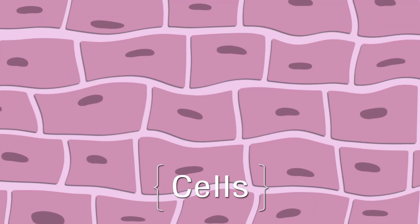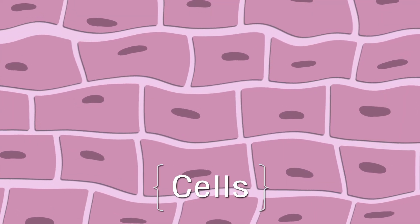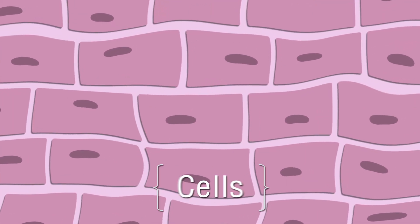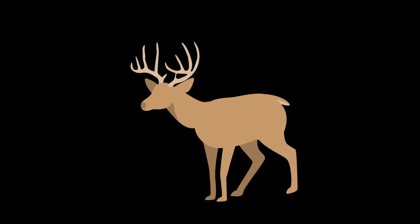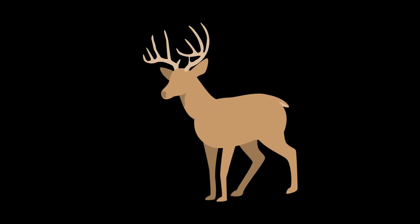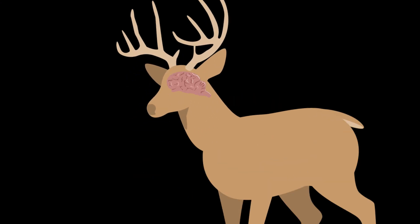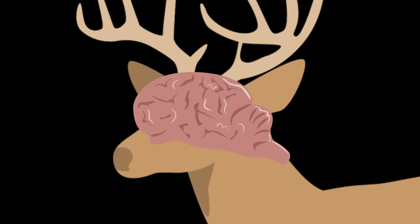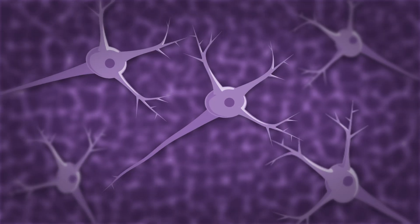Our new friend the deer has many different organs that are composed of tissues. Tissues are a group of cells that work together performing a specialized function. Some tissues, like muscle tissues, help the deer to move, while other tissues, like nervous tissues, help the deer to make quick decisions.